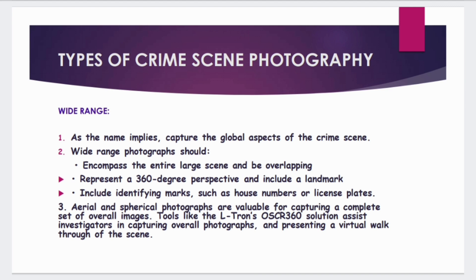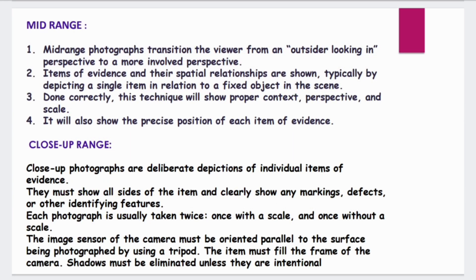Wide range represents a 360-degree view of the crime scene including landmarks and all identifying marks. In mid range, an outsider-looking-in view is taken so that we get a clear idea about the crime scene. Items of evidence and their spatial relationships are shown by taking an establishment shot. This gives an overall idea of the crime scene and shows the precise position of each item. Each photograph should provide a deliberate depiction of each individual item, and each photograph is taken twice — with and without scale — using a tripod, avoiding shadows.